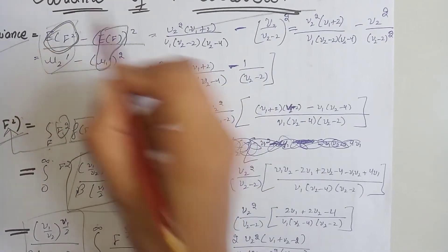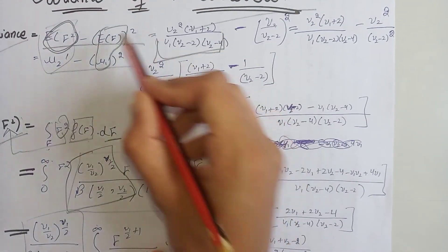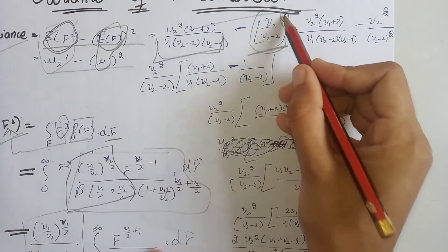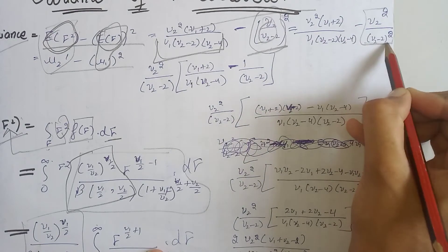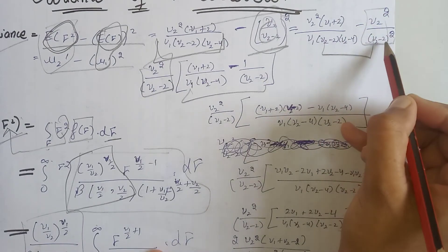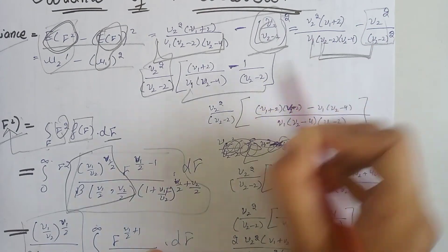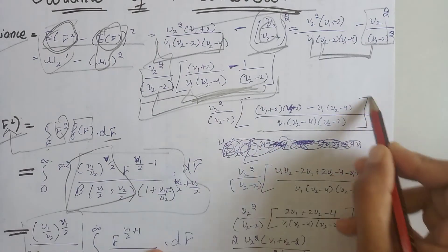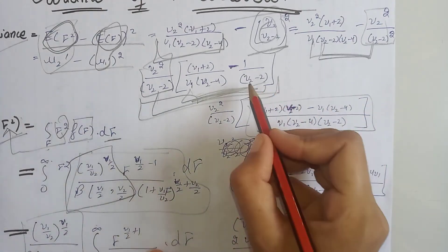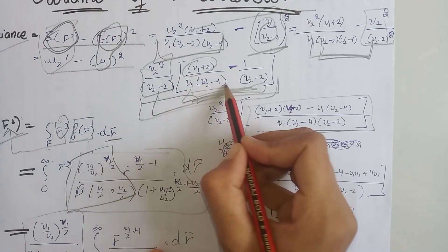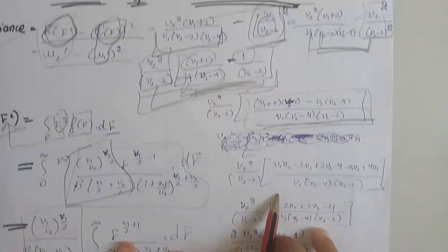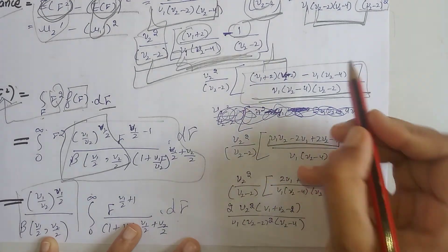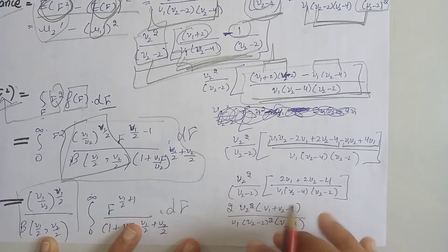Now we calculate the variance. We write E(F²) — the value we just calculated — and subtract the square of the mean of the F-distribution. On squaring the mean term we get the full expression. We then take ν₂² divided by (ν₂ minus 2) as a common factor from both terms.